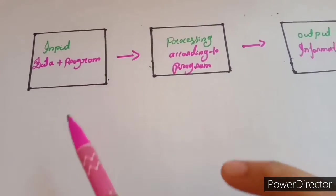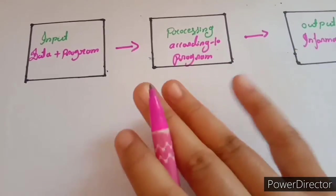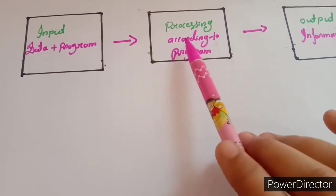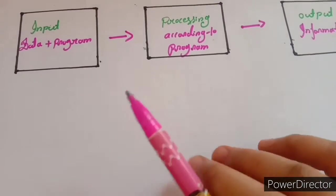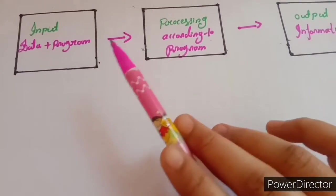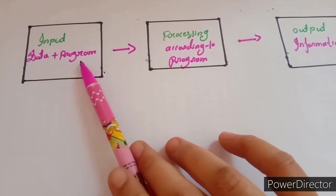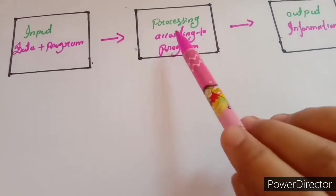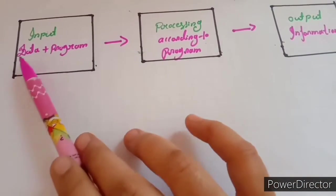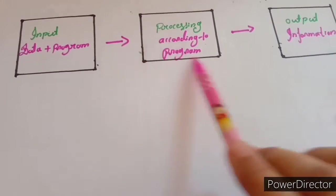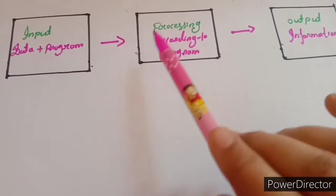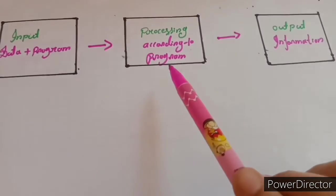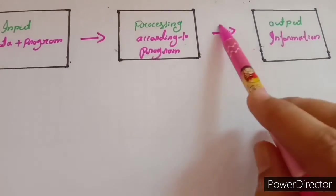Program is a set of instructions Or set of softwares. Next, Processing: When the computer works on data According to instruction, It is called processing. According to program, Input Data Plus Program, this way is input To System. Then According to program, This method is called Processing.